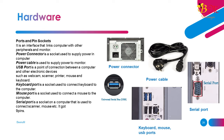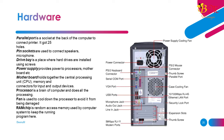Keyboard port is a socket used to connect a keyboard to the computer. Mouse port is a socket used to connect a mouse to the computer. Serial port is a socket on a computer used to connect scanner, mouse, etc. — it has 9 pins. Parallel port is a socket at the back of the computer to connect a printer — it has 25 holes. Pin sockets are used to connect speakers and microphone. Drive bay is a place where hard drives are installed using screws. Power supply provides power to processors, motherboard, etc.